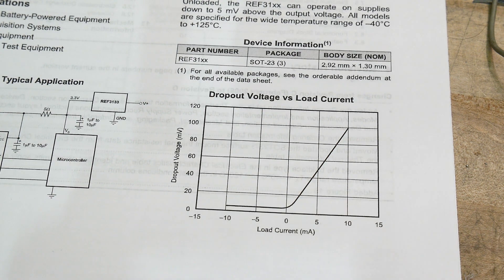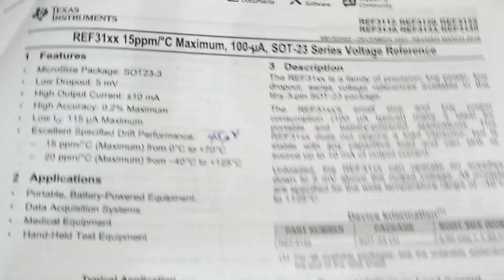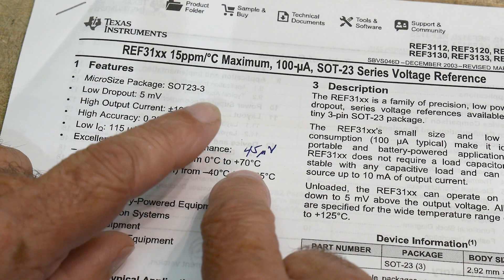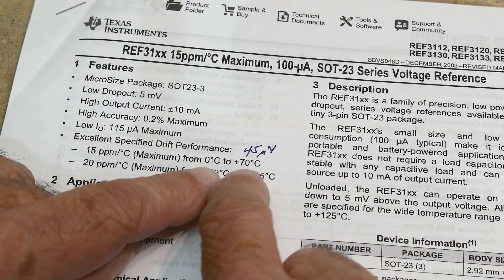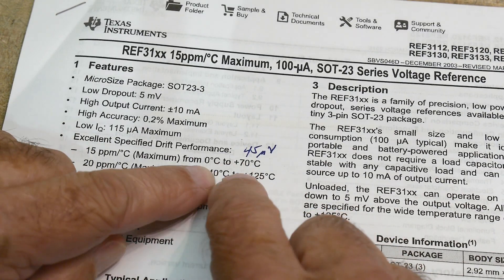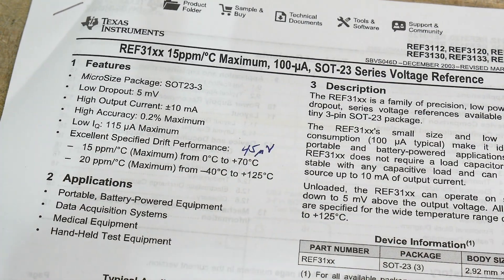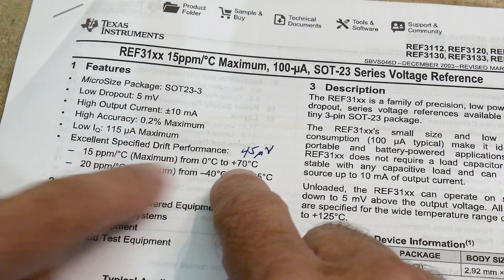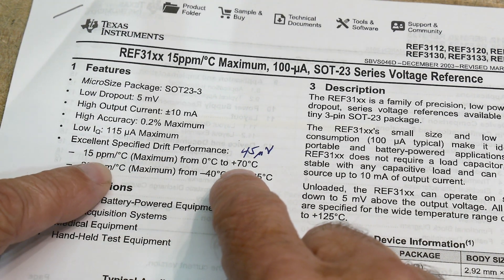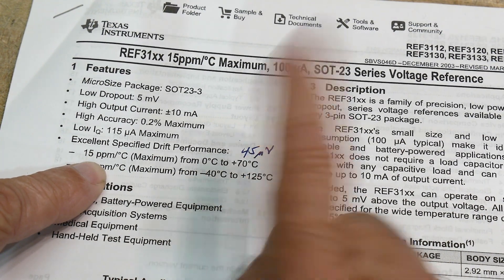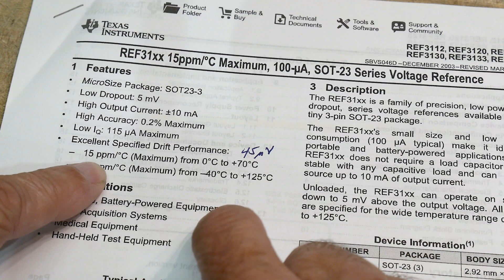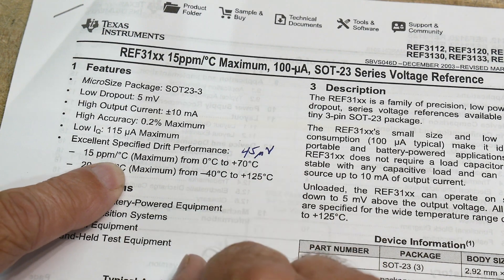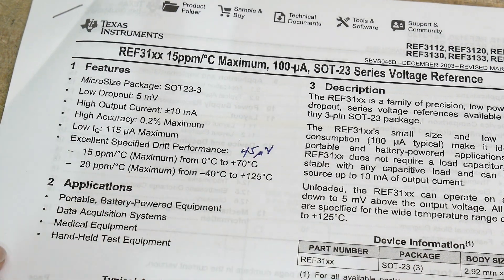So what other things does this datasheet have to say? It says here, excellent maximum drift. From 0 to 70 degrees C, a lot of instruments are designed between 0 and 40 for home use. But 0 to 70 is a good number here. The specified drift is 15 ppm per degree C. And at 3 volts, 15 ppm is 45 microvolts. So if you have a 10 degree rise in temperature, you're only going to see a 450 microvolt change. That's pretty incredible.